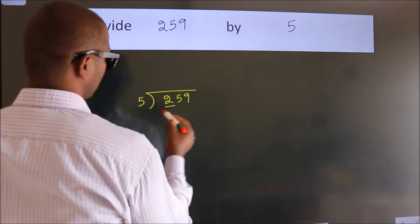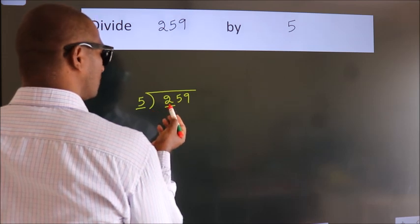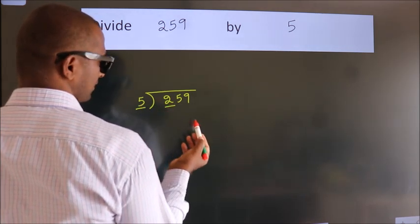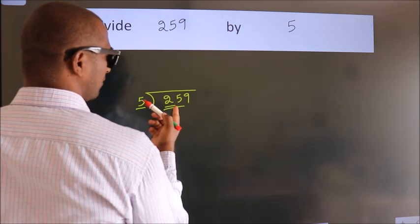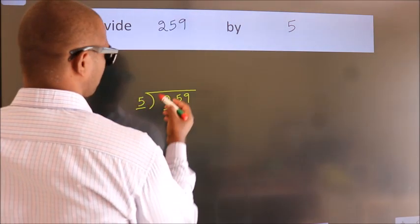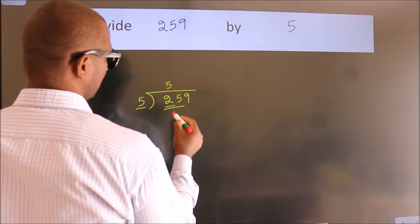Here we have 2, here 5. 2 is smaller than 5, so we should take 2 numbers: 25. When do we get 25? In the 5 table. 5 times 5 is 25.